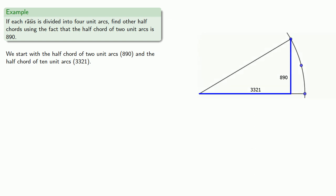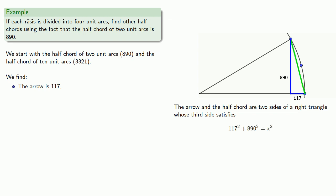Remember, the half chord of the complementary arc is a part of the radius, and the remaining part is going to be the arrow, 117. The arrow and the half chord are two sides of a right triangle, whose third side satisfies, and so that length will be... This is the chord of two unit arcs.